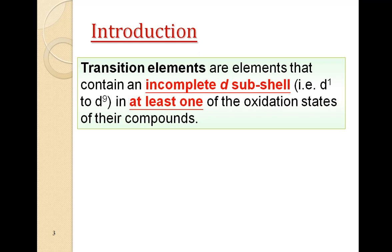These are also called transition elements. Now what is the word transition means here? Transition means change. When you move from s to p-block through d-block you will find there is a change or transition in the properties. Here transition elements are defined as those elements which contain an incomplete d-subshell means have d1 to d9 electrons in at least one of the oxidation states of their compounds.